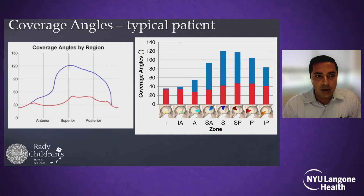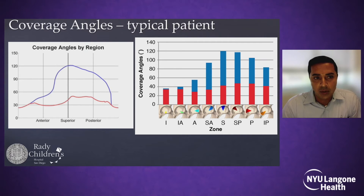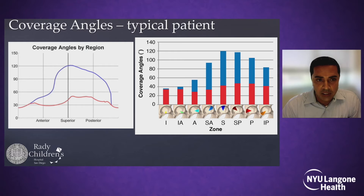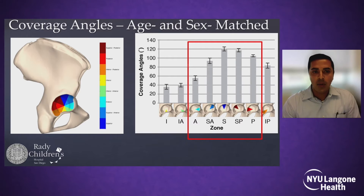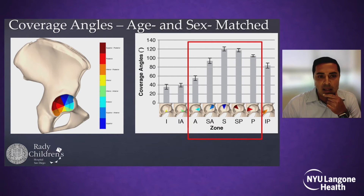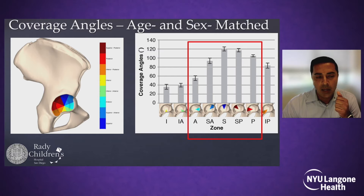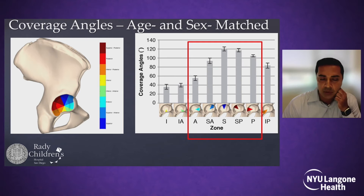To touch on the 3D analysis technique: a typical acetabulum should show the most coverage directly superior or lateral with a coverage angle of 120 degrees, corresponding to a lateral center-edge angle of 30 degrees, and then more open anteriorly with less coverage versus more coverage posteriorly in a typical anteverted acetabulum. When assessing patients in clinic and determining where they're deficient and where surgical intervention should target, we compare them to a cohort of age- and sex-matched normal patients to define exactly what we're trying to accomplish with surgery.